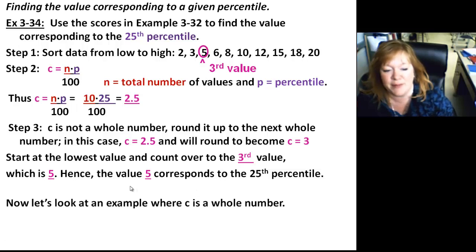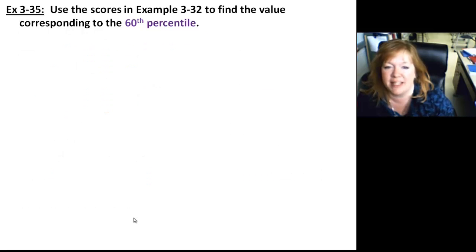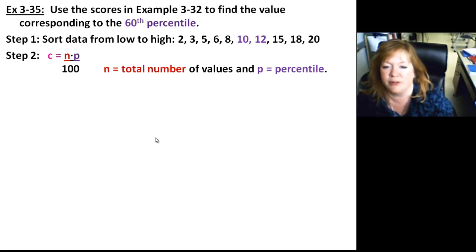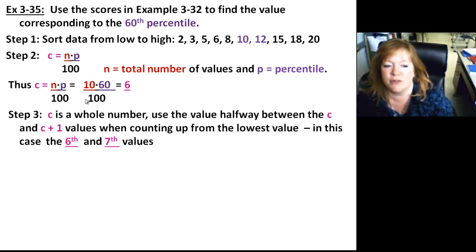Let's look at an example where C is a whole number. Now you think, hey, it's a whole number, we like whole numbers, but it gets a little more complicated when C is a whole number. Don't ask me why. Let's just learn how to do it. So use the scores to find the value in the 60th percentile. Sort the data low to high. Same start. Find C. N equals the total number of values. P is the percentile. So we're going to have 10 times 60 over 100, which gives me 6.